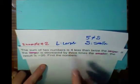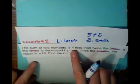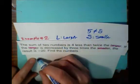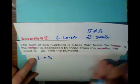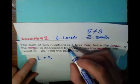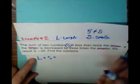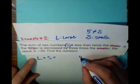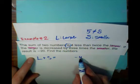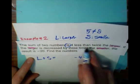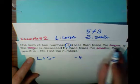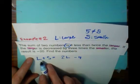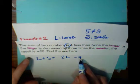This one is going to be a little more interesting. The sum of two numbers — our two numbers are larger and smaller — so L plus S. That equals 4 less than twice the larger: 2L minus 4. So L plus S equals 2L minus 4.